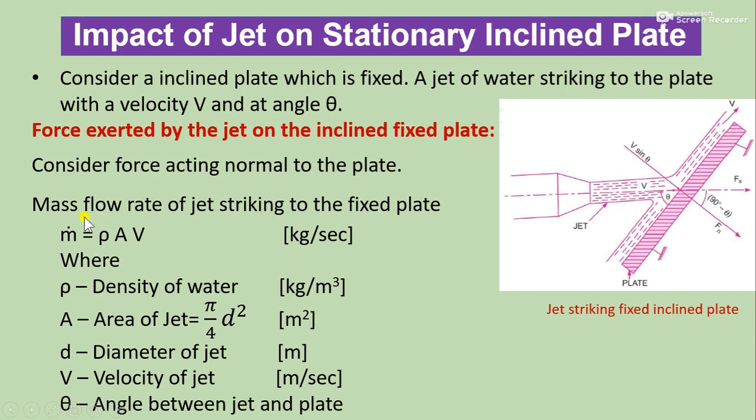In this case, mass flow rate of the jet striking the fixed plate is ρAV, where ρ is the density of water, A is area of jet (π/4 × d²), d is the diameter of jet, V is velocity of jet, and θ is angle between jet and plate.